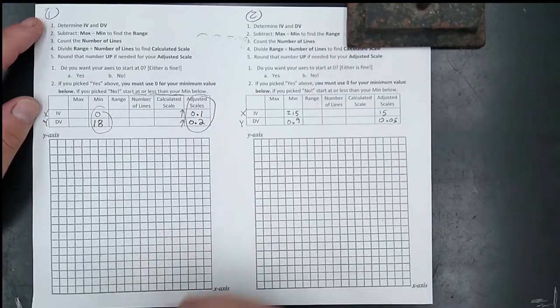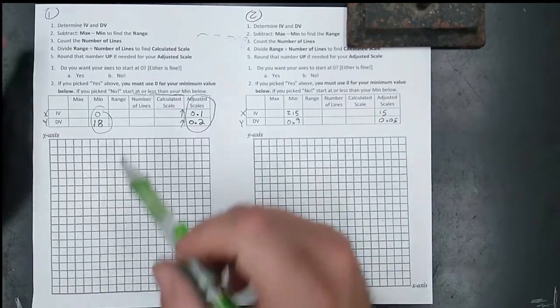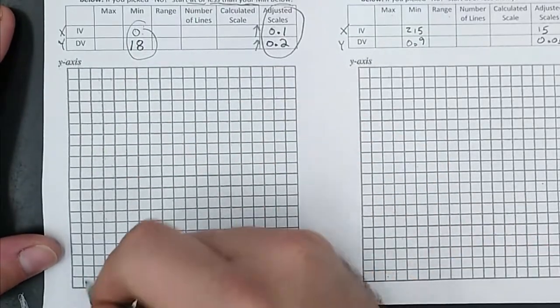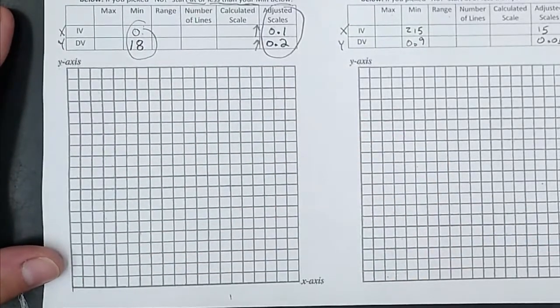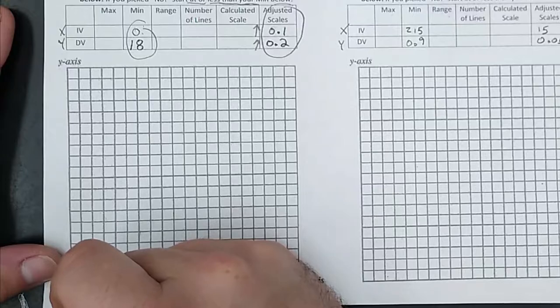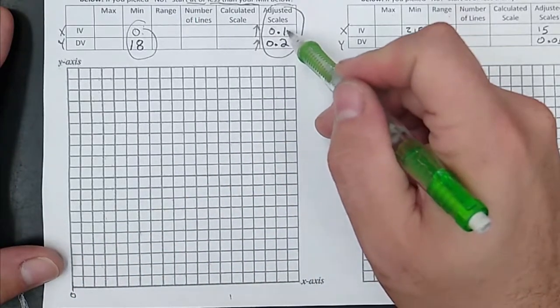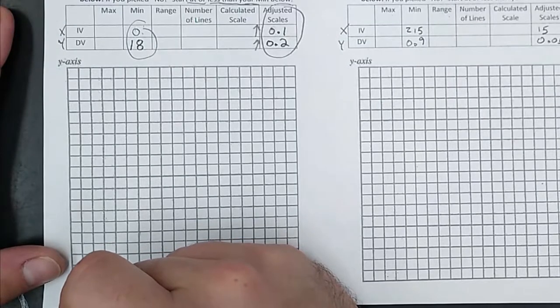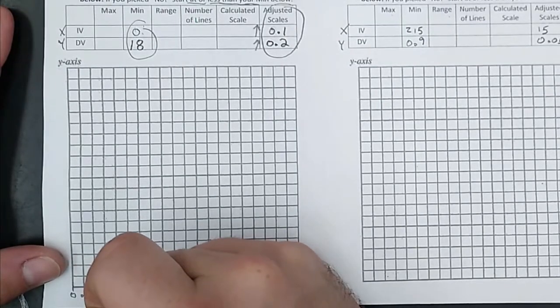I'll get this one started for you, and the rest are going to be all on your own. So the X axis, our independent variable, we're starting at 0. X is this one. So this little line right there is going to be 0. Then it says we're counting by 0.1. So that one right there is 0.1. Right here is 0.2.